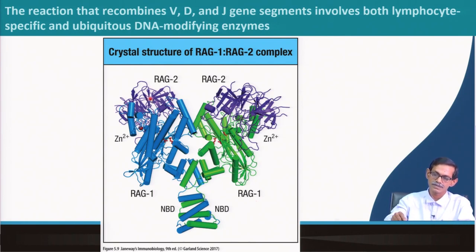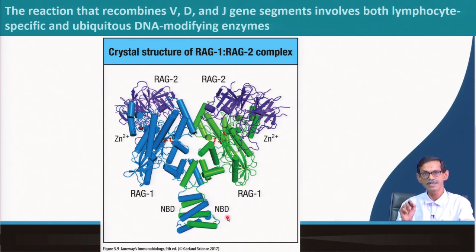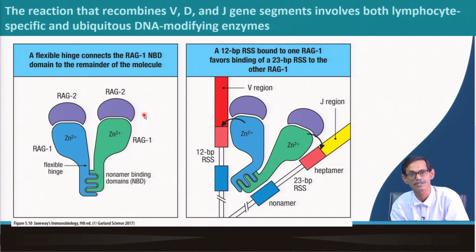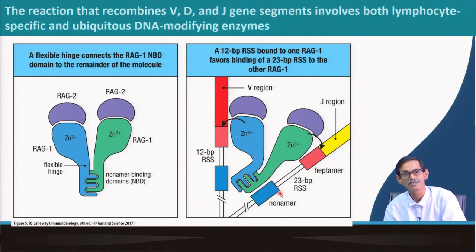This is how RAG1 and RAG2 look. The upper violet part is RAG2, and the bottom green and red part is RAG1 — this is a crystal structure. RAG1 has a zinc-dependent endonuclease activity, which is the active part of the enzyme. The bottom tail part is the NBD — Nonamer Binding Domain — which binds the nonamer repeat sequence.